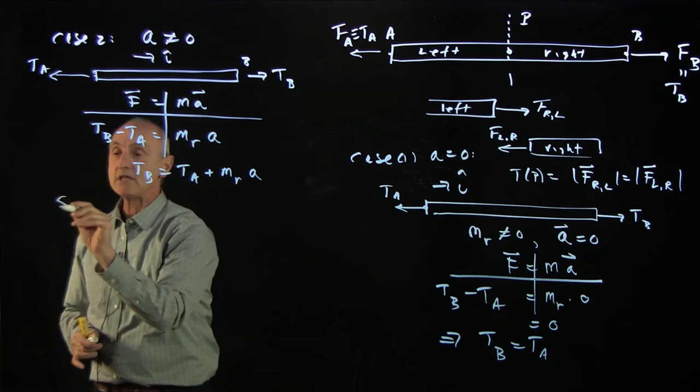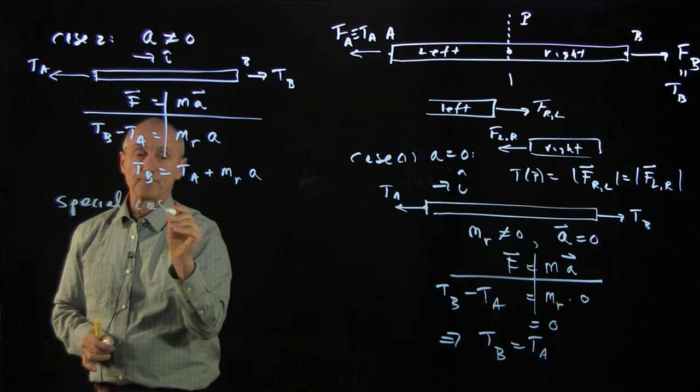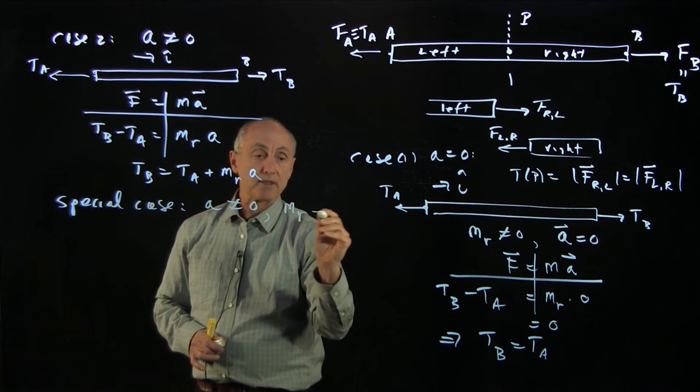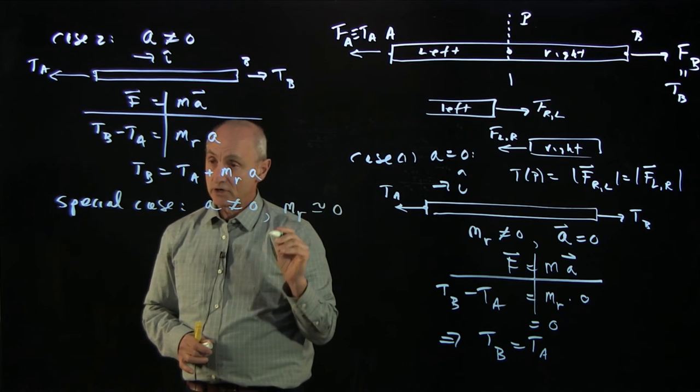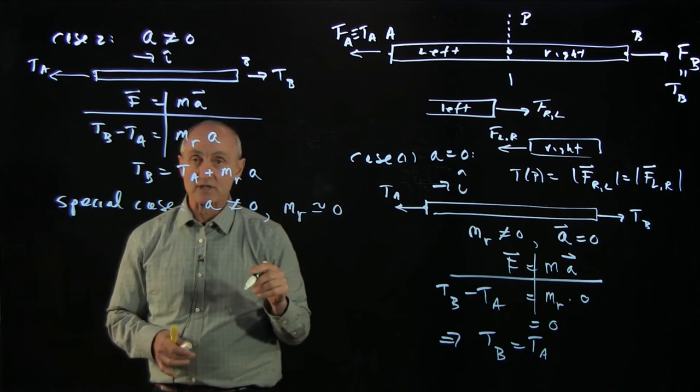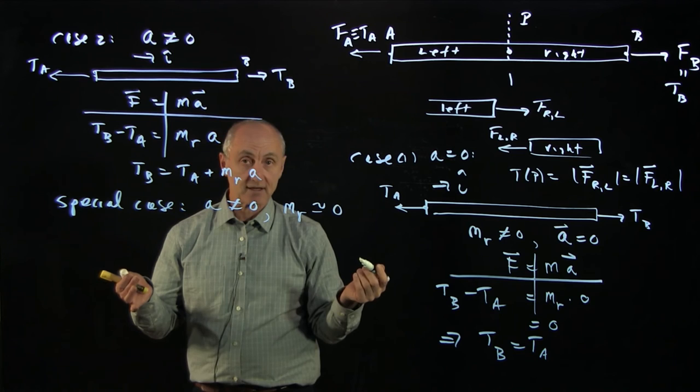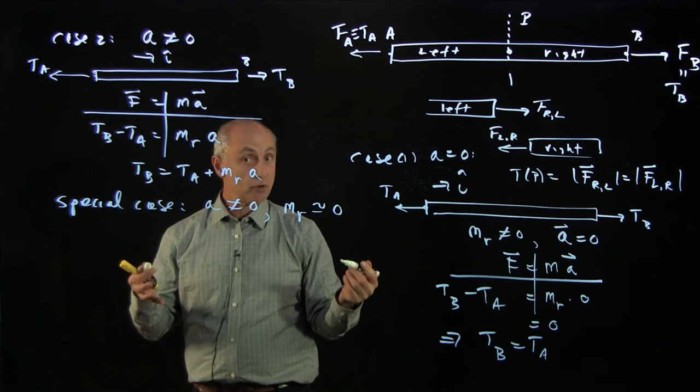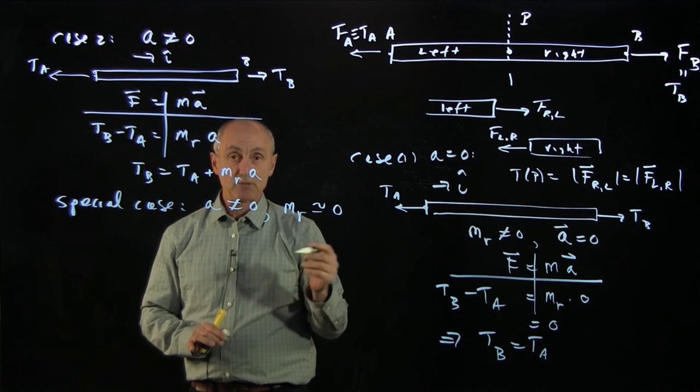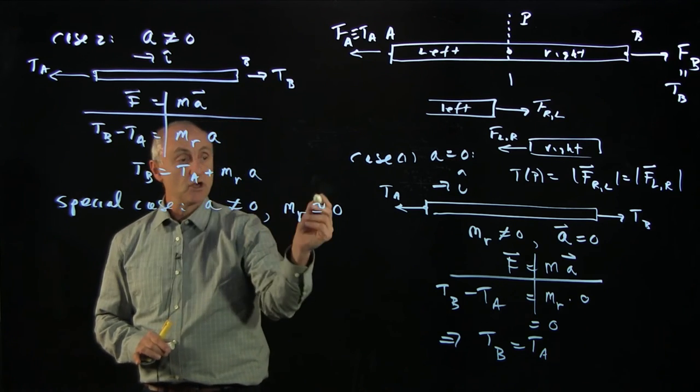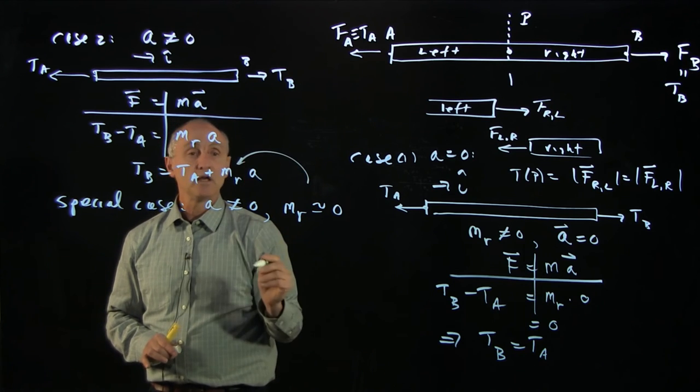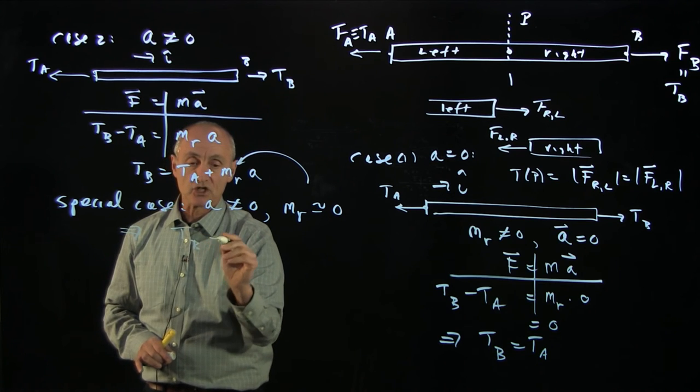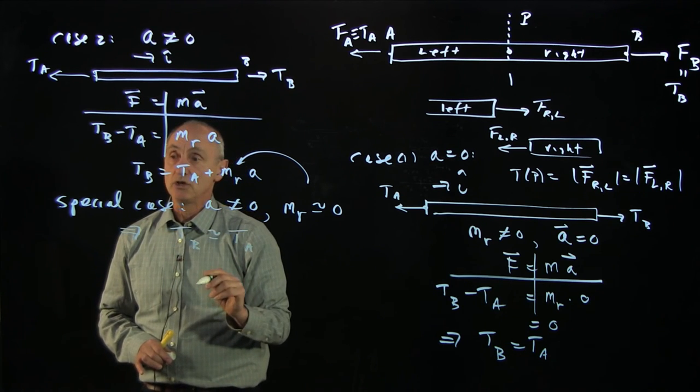Now there's a special case here that we want to consider. So even though A is non-zero, let's assume that the mass of the rope is very small. And this is often, people call this, assume the rope is massless. Well, that's a little strange. We can say the very, very light string is often the same type of modeling. And under those circumstances, with that assumption, you see that there is no contribution here. And with that assumption that the tension is approximately uniform.